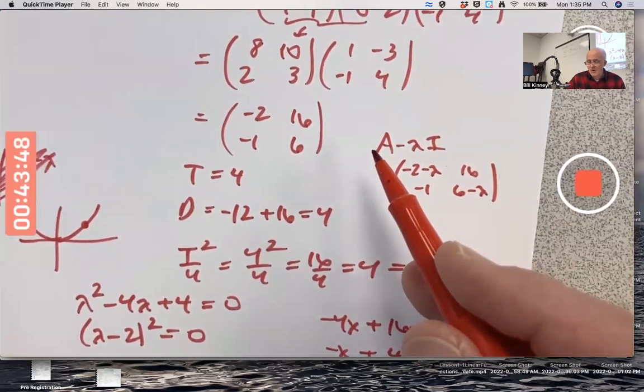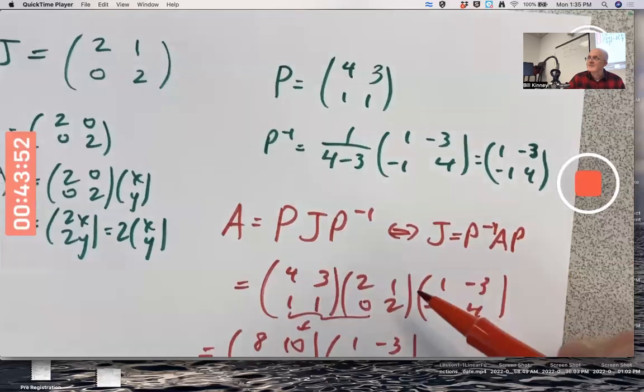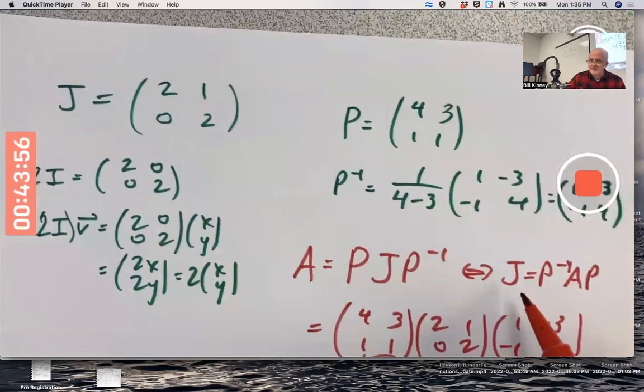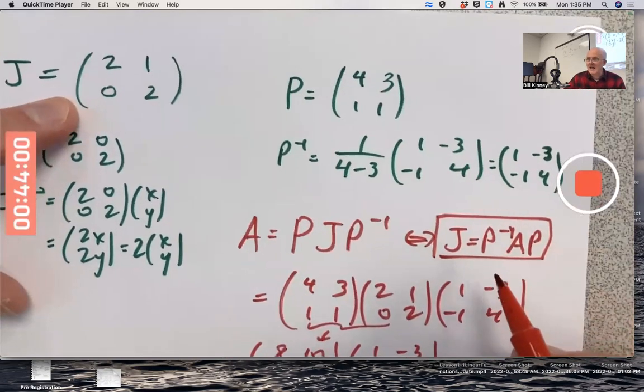What is its Jordan canonical form? You'd have to undo all this stuff to get back to J. You'd have to do this, figure out P and do this calculation to get back to J and there it would be. But how do you do that?